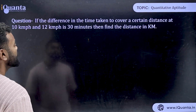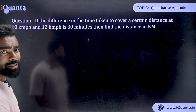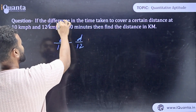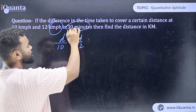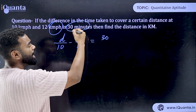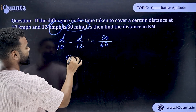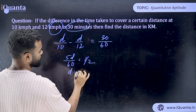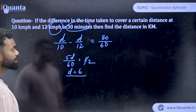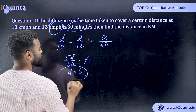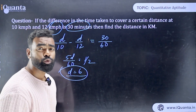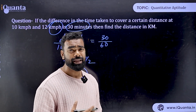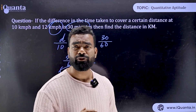Question: The difference in time to cover a certain distance at 10 km/h and 12 km/h is 30 minutes. Find the distance. Let distance = d. Then d/10 − d/12 = 30/60 = 0.5. Solving: 5d/60 = 0.5 — wait, 2d/120 = 1/2, giving d = 6 km. Units matter here — always convert minutes to hours when speed is in km/h. These are basic foundation questions.